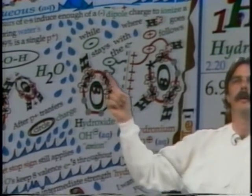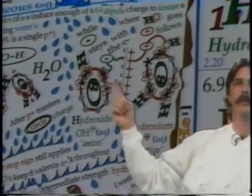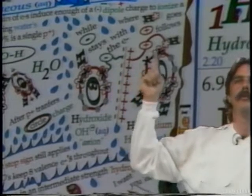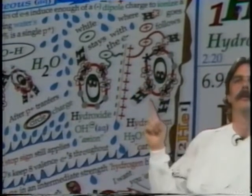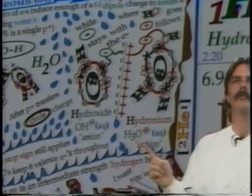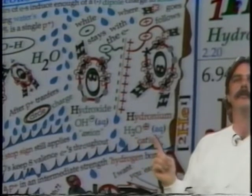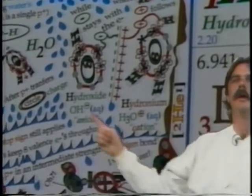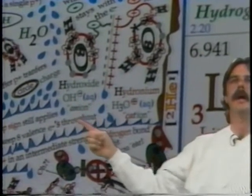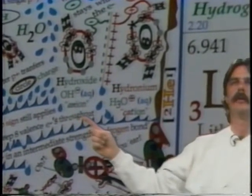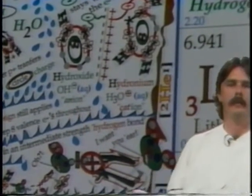Hydrogen's one proton will actually be pulled away to another water molecule. This results in what's called the hydronium H3O⁺ cation in water and the hydroxide OH⁻ anion in water. This is what the pH scale is based on — the plus and minus charges in water. It's called the dipole nature of water.